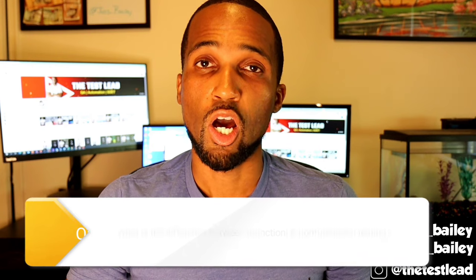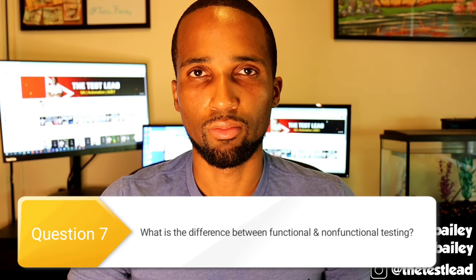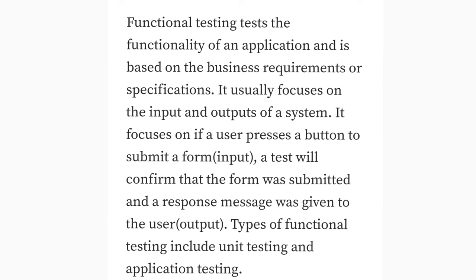Number seven: what's the difference between functional testing and non-functional testing? Functional testing tests the functionality of an application and is based on business requirements or specifications. It usually focuses on the inputs and outputs of a system — for example, if a user presses a button to submit a form (input), a test will confirm that the form was submitted and response messages were given to the user (output). Types of functional testing include unit testing and application testing.